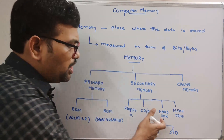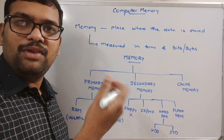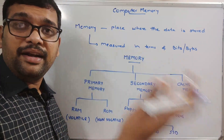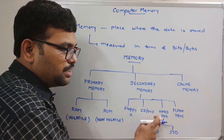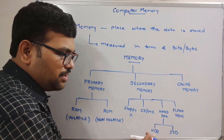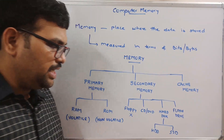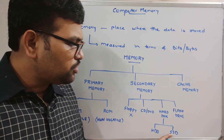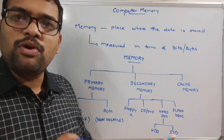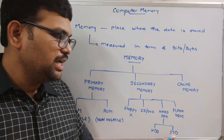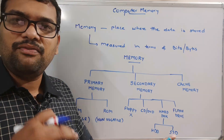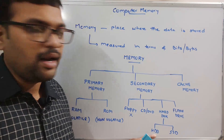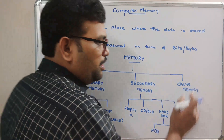The hard disk is called secondary memory where complete data is stored. Whenever we need it, we can retrieve the data from the hard disk. It is divided into two categories: HDD and SSD (Solid State Drive). SSD is more expensive than HDD because it gives a faster response than the hard disk.